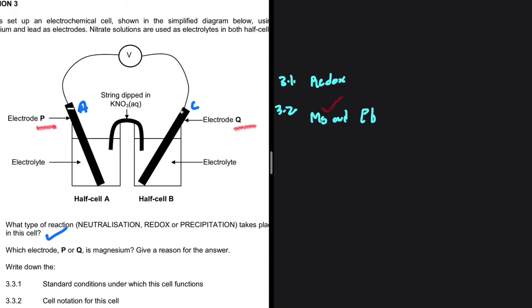Magnesium is a stronger reducing agent. It is going to be electrode P as it is negative and consequently the anode.